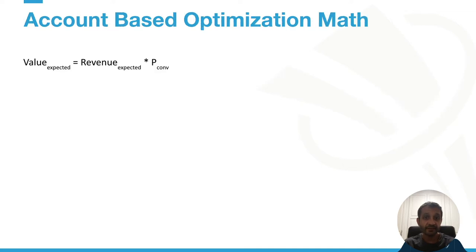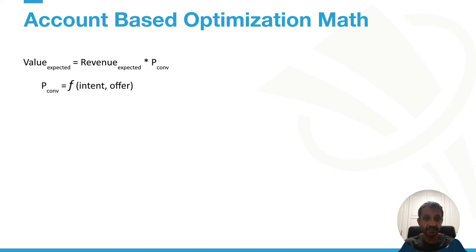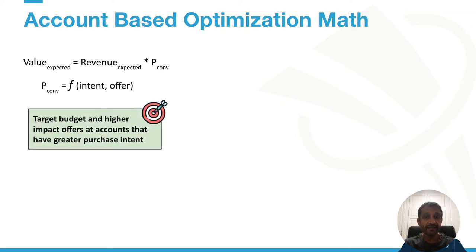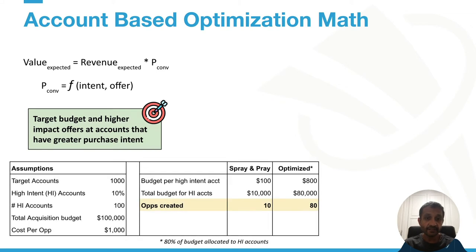So what's the value of purchase intent within the buying window? Let's do some funnel math to solve for it. The expected value of an account at any point in time can be modeled as the revenue expected from that account — either on an LTV or annual contract value basis — multiplied by the probability of conversion at that point in time. From our experience, the probability of conversion to opportunity is largely determined by the customer's purchase intent and the offer you put in front of them. The question is: what if you could allocate more budget and create higher-impact offers to those high-intent accounts that are within the buying window?